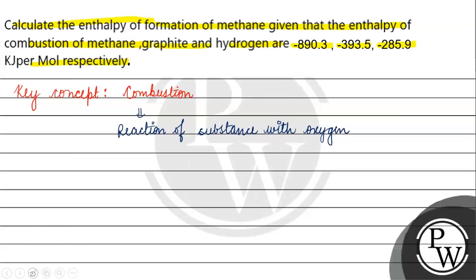Now let's talk about the combustion of Graphite. Graphite reacts with oxygen to give carbon dioxide. The enthalpy value for this reaction is minus 393.5 kJ/mol.